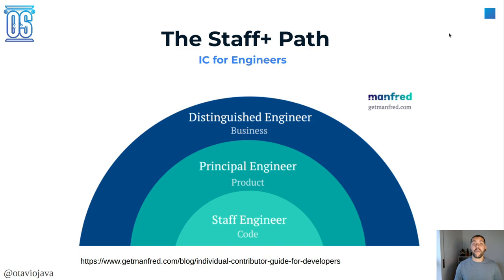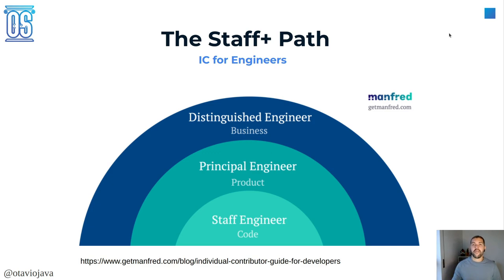When we talk about staff plus engineer, we also need to talk about the impact each level has. The staff engineer might impact more the code, more teams, and fine architecture. Then we move to the principal engineer, who may impact more teams and more the product itself. And finally, the distinguished engineer, who impacts more the organization itself — the enterprise. Pay attention to your organization's specific definitions, as each company may have a different kind of description. Some companies also have a fellow engineer as one additional layer.